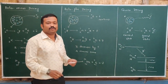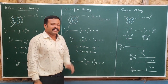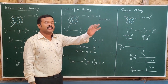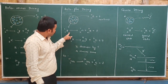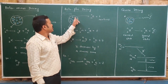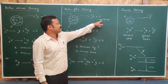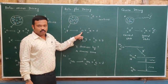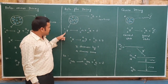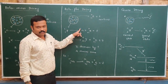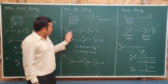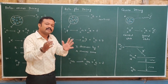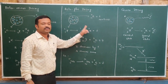Now let us understand beta plus decay. Beta plus decay takes place in a nucleus where the number of protons is greater than the number of neutrons, making it unstable. Here, a proton converts into a neutron, and a positron is emitted along with a neutrino. When a proton (charge 1, mass 1) converts into a neutron (charge 0, mass 1), to balance this a particle with charge plus 1 and mass 0 is needed — that is the positron. So a positron is always emitted in beta plus decay.